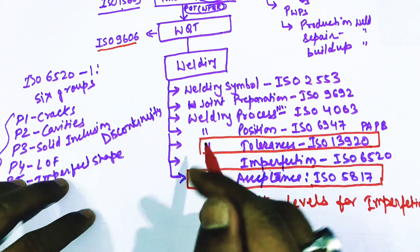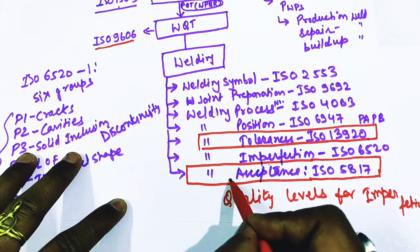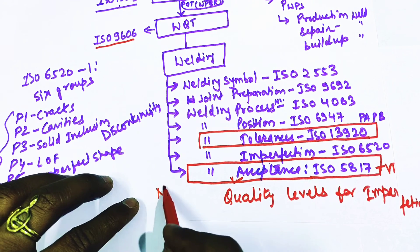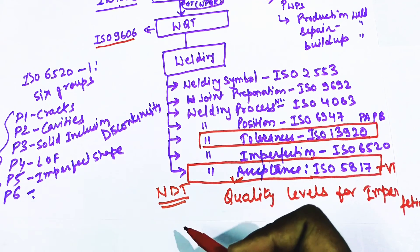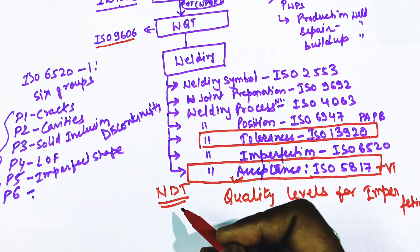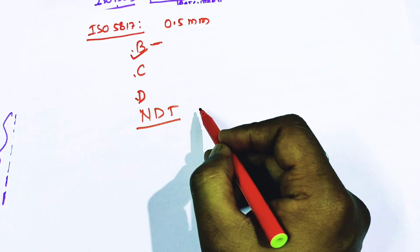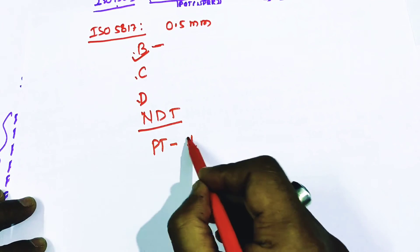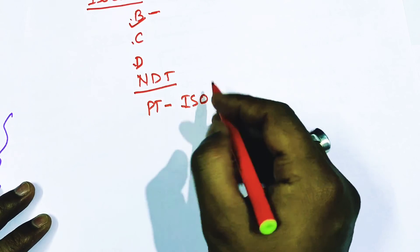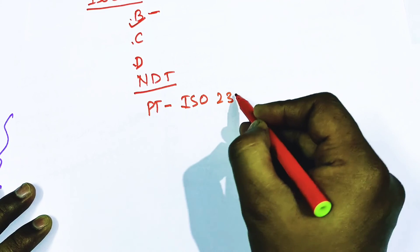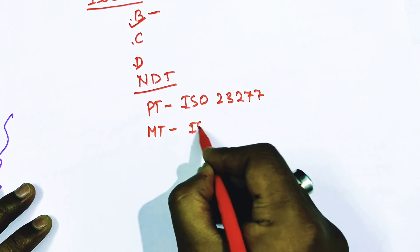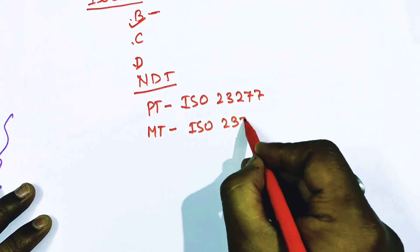The acceptance code ISO 5817 is applicable for visual testing. For other NDT methods, separate acceptance codes exist. For penetrant testing (PT), the acceptance code is ISO 23277. For magnetic particle testing, the acceptance code is ISO 23278.